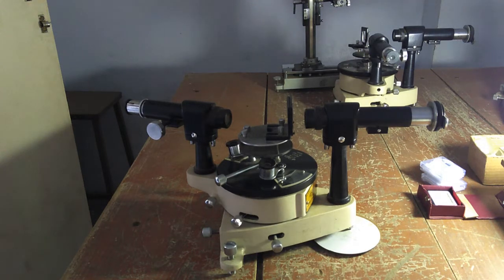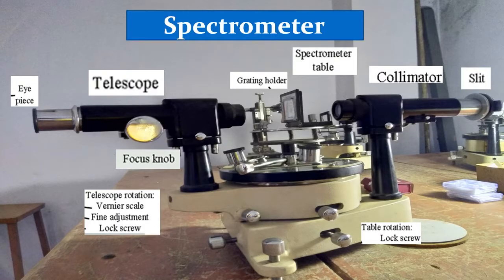The spectrometer is an optical instrument used to study the spectra of different sources of light and to measure the refractive index of materials.